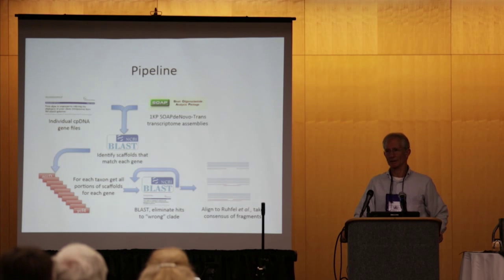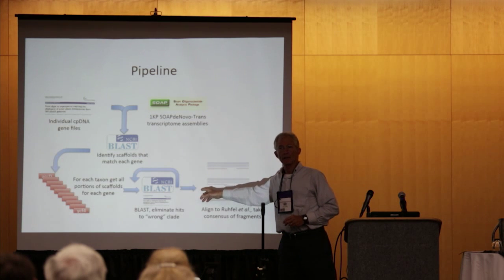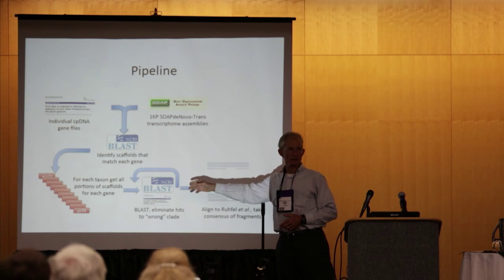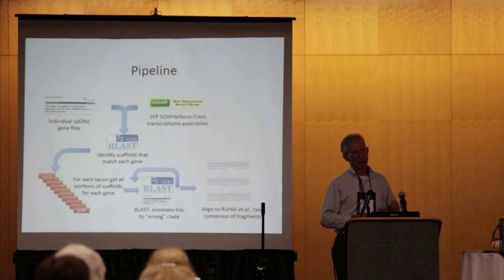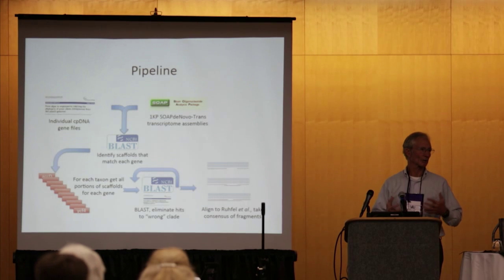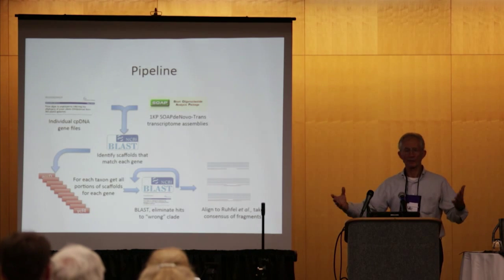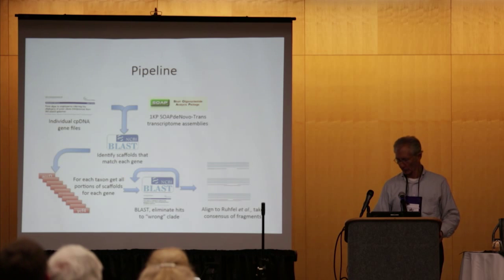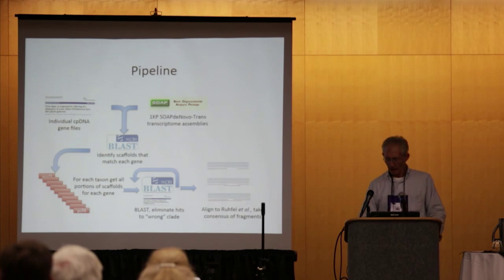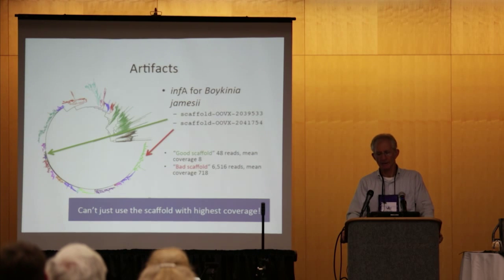We had a pipeline to assist with the extraction of these Plastigena. We had some real issues with artifacts — this took us a long time to solve. We really solved it by doing a BLAST search to close relatives. For example, if trying to assemble genes for members of the Rose family, we would do an initial BLAST to members of the FABIDS. These were gene sequences taken from Ruhful et al. 2014 — complete chloroplast genome sequences. That was an important step.